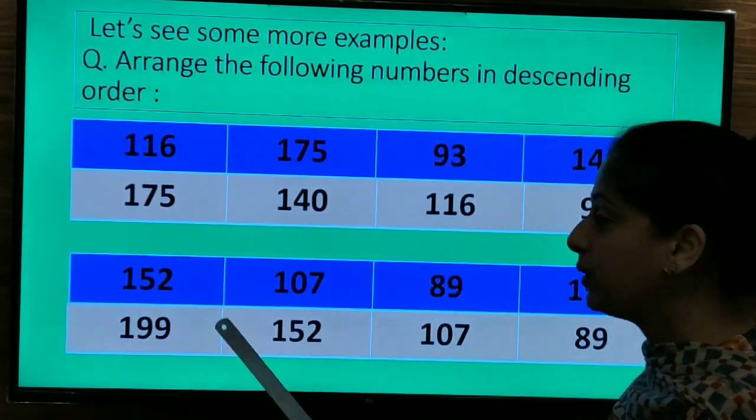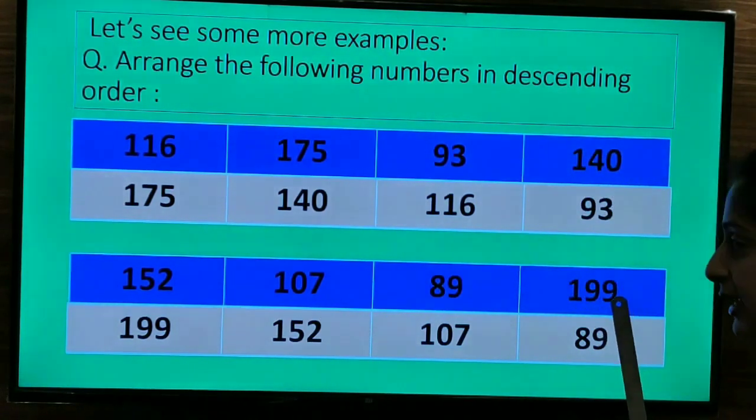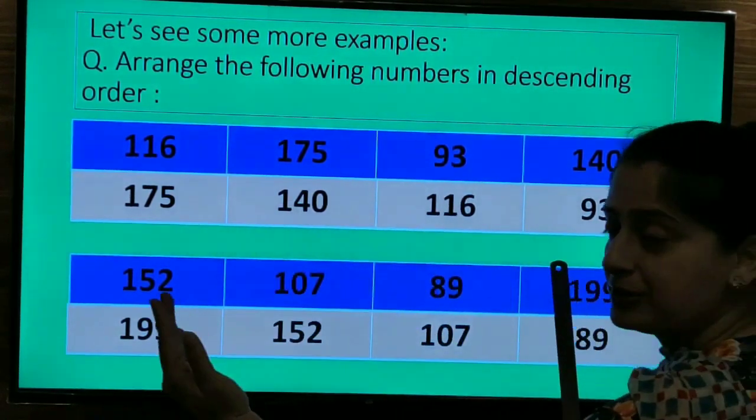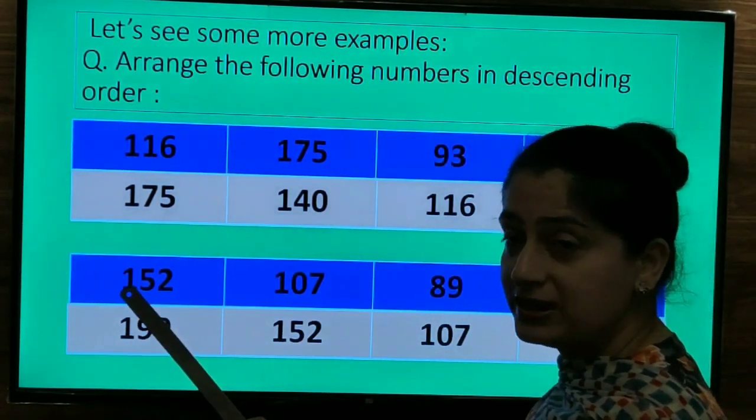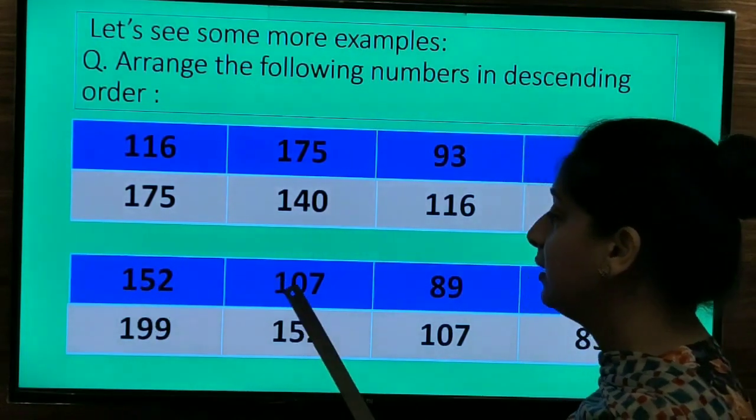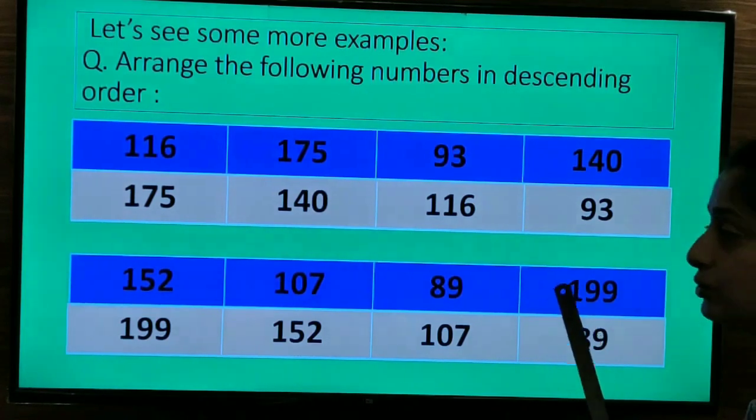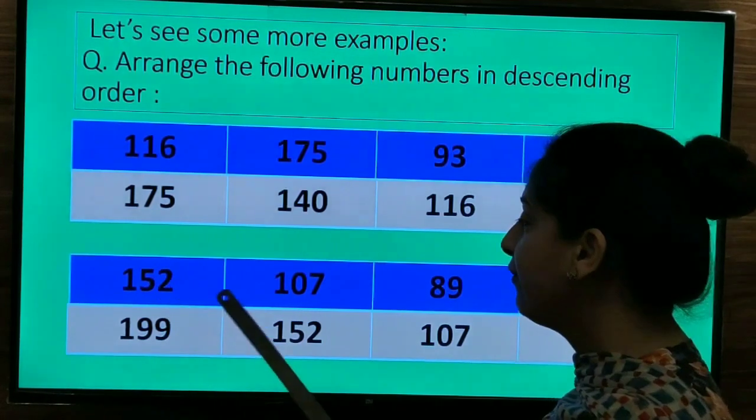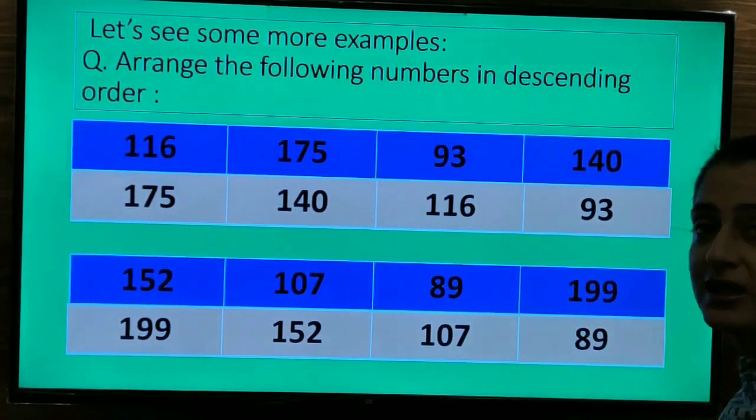So next we are going to take 152, 107 and 199. Here we are going to look for the leftmost digit, that is 1, the number at the hundredths place. 1, here again it is 1 and again 1. So we are going to the tenths place. Here it is 5, 0 and 9. Which one is bigger? 5, 0, 9. Correct. 9.